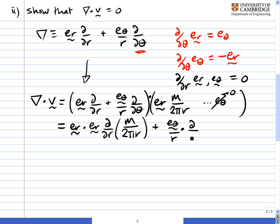So the dot goes there, d by dθ of e_r m over 2πr. Now, the first expression is easy. e_r dotted with e_r is just equal to 1. So this becomes d by dr of m over 2πr, which is minus m over 2πr squared.